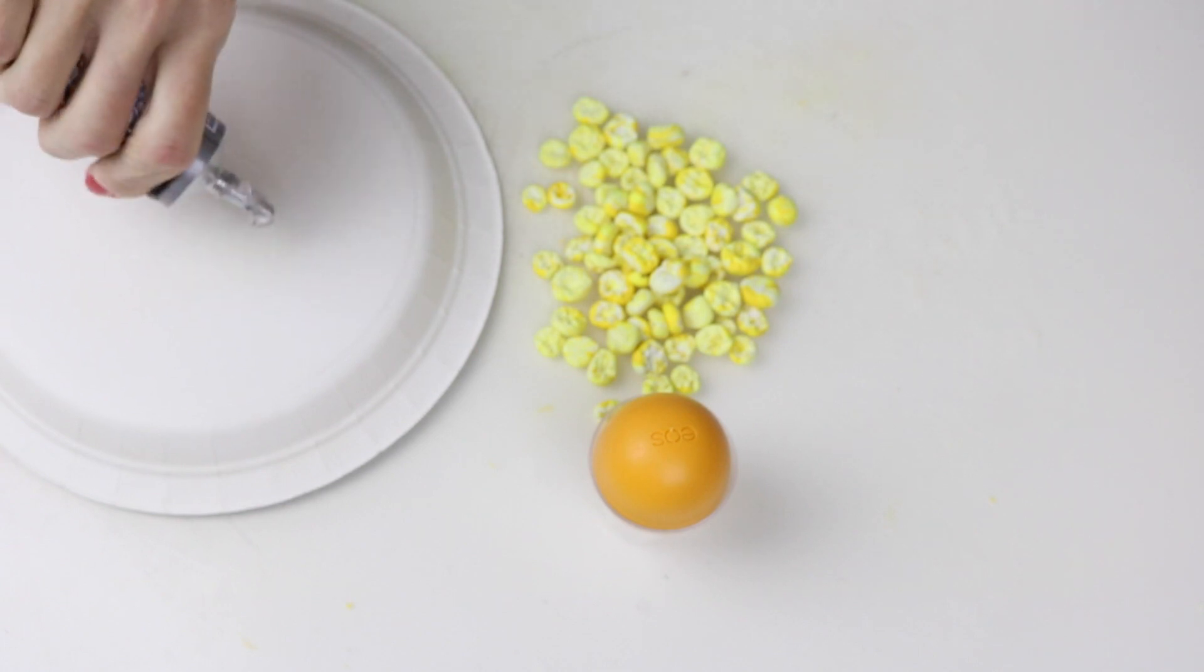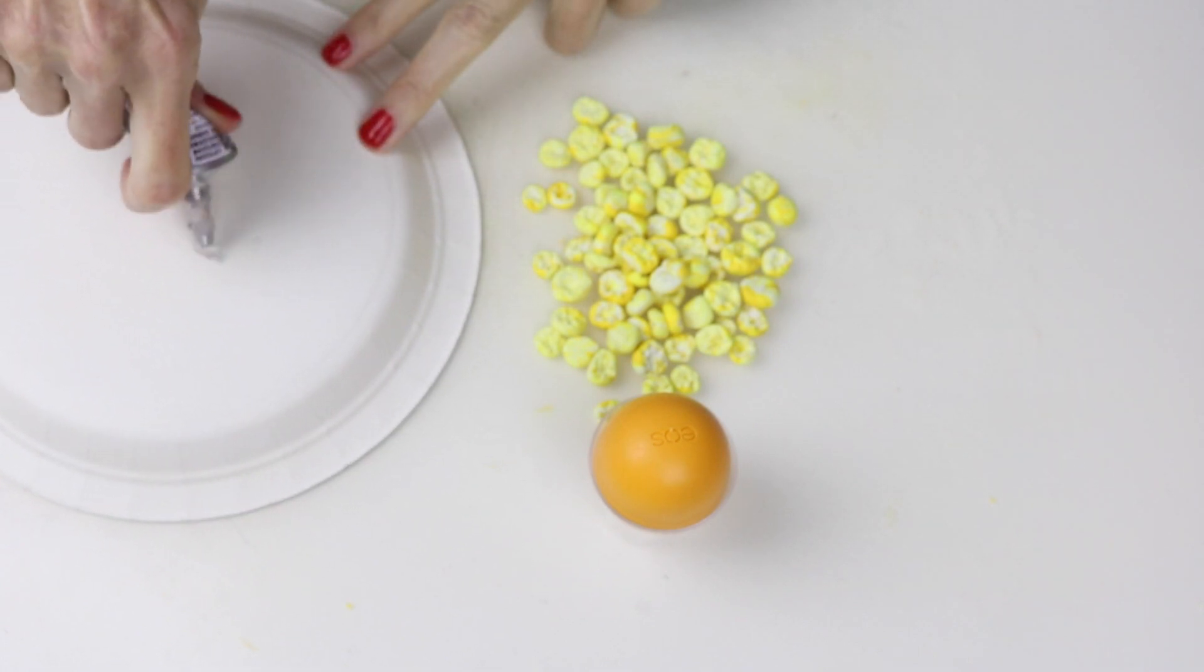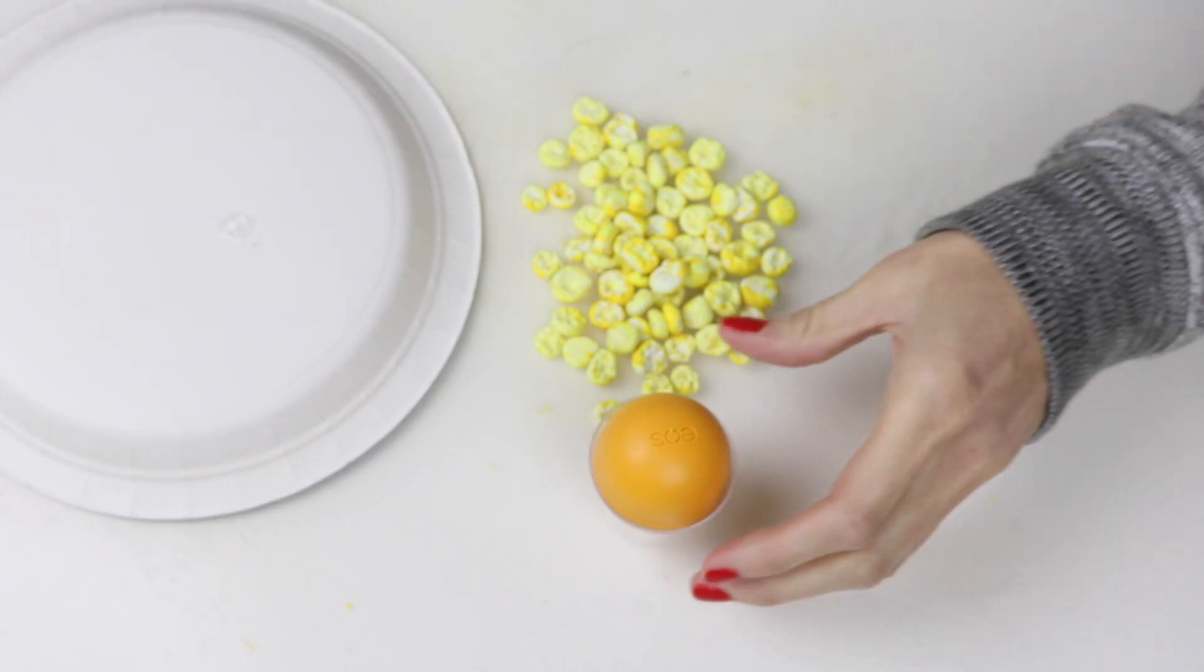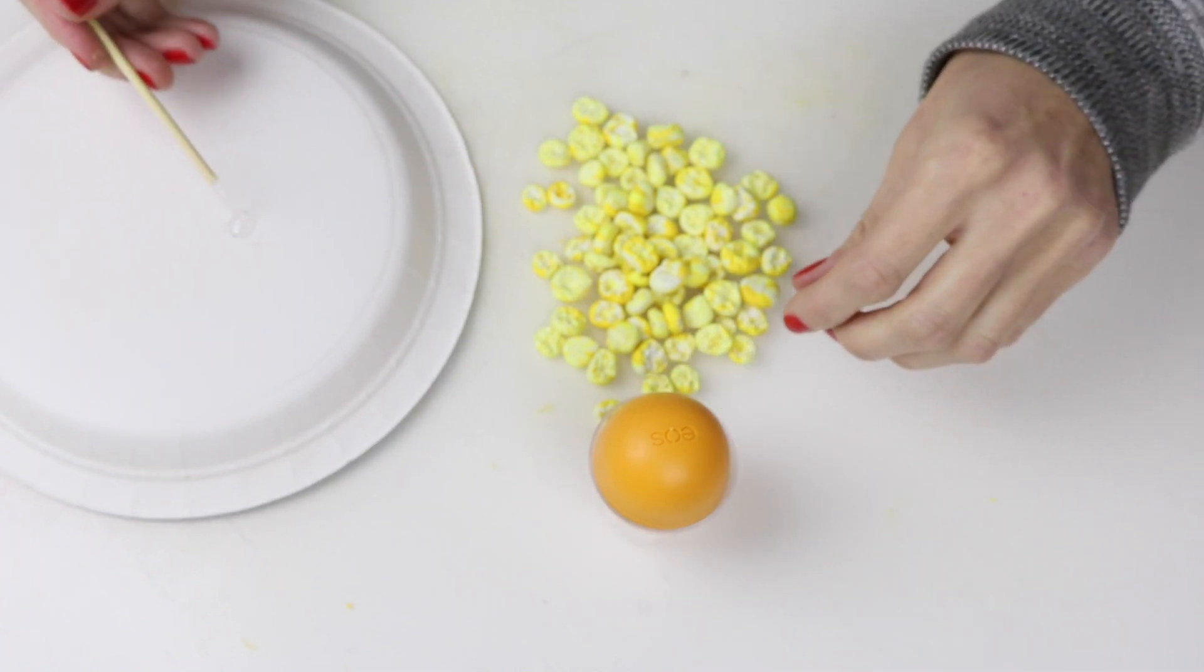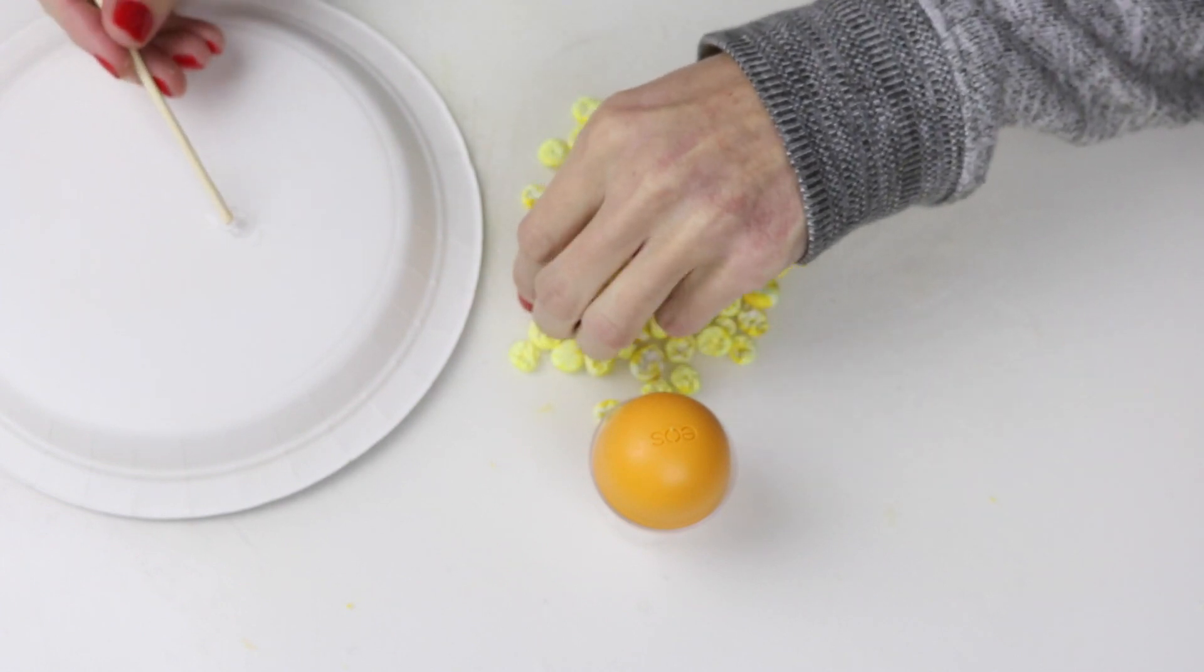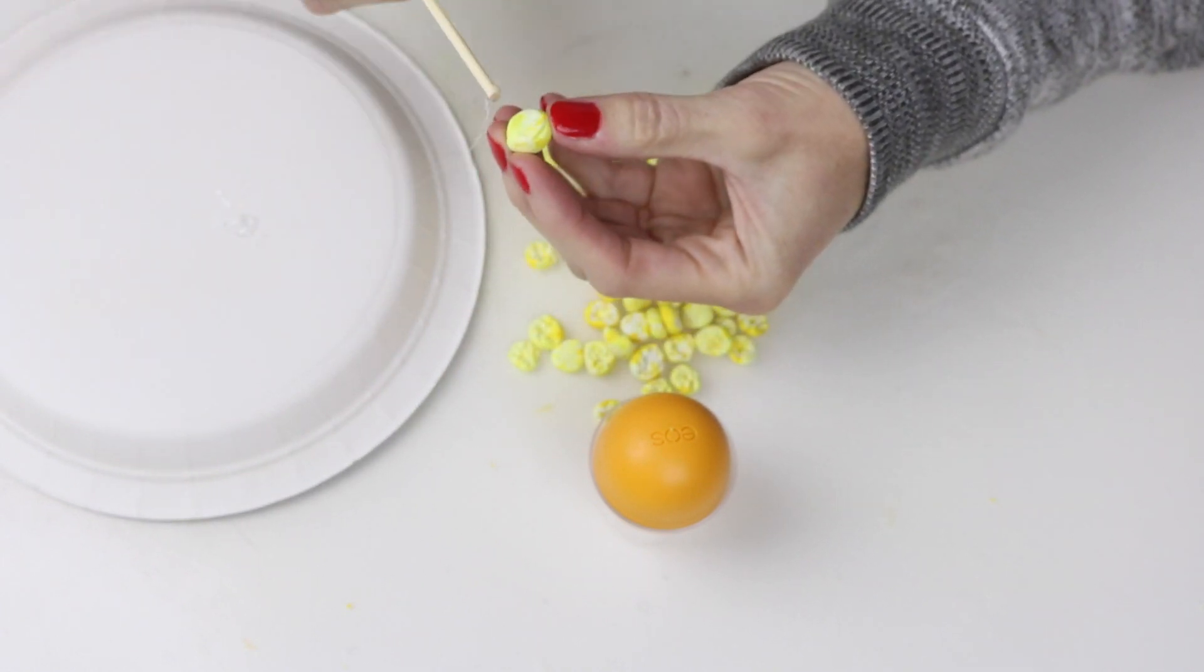Once that has dried, then I just placed some E6000 glue on a plate and grabbed a toothpick, and I started to put the popcorn pieces onto the top of the EOS container.